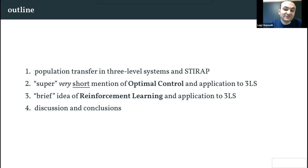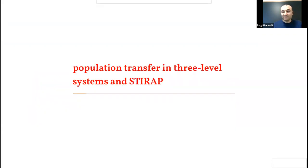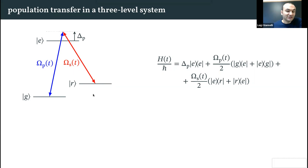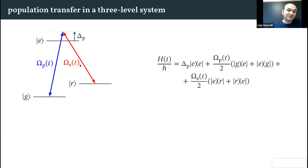Then I will give a brief idea of reinforcement learning and how it can be applied to the same problem, and in the end we will conclude with some discussion. The problem we address is population transfer in three-level systems. Consider a three-level system with states g, r, and e, where e is the excited state. The states g and e are coupled with a time-dependent Rabi frequency omega_s(t).